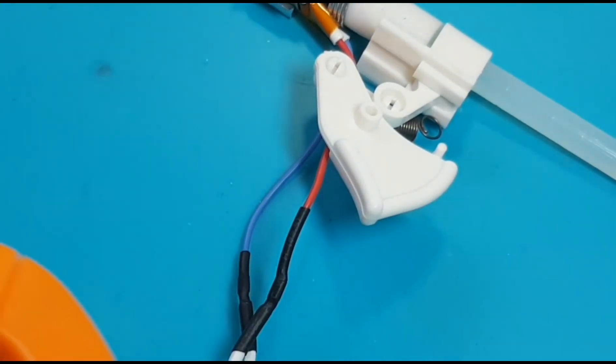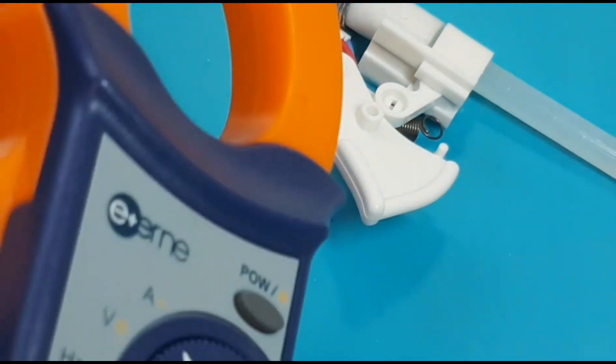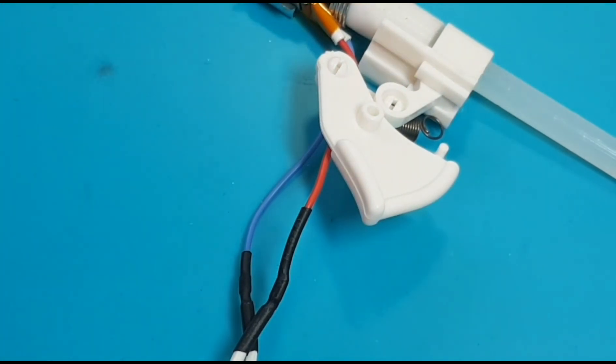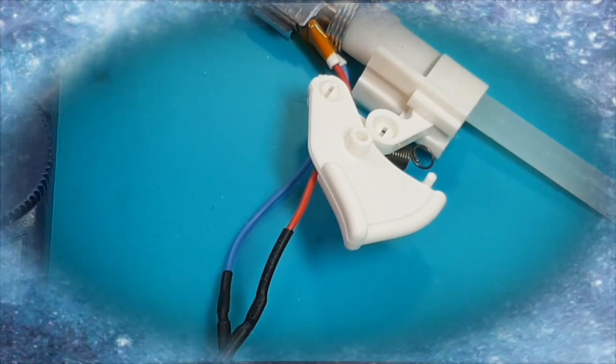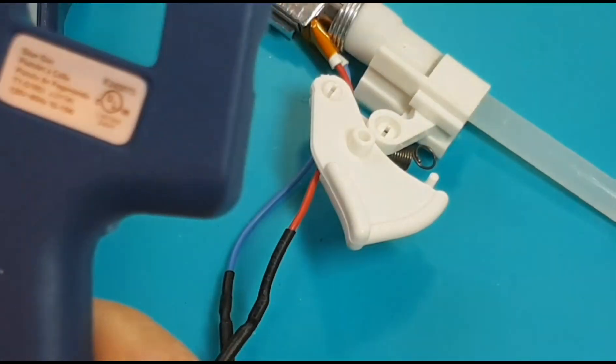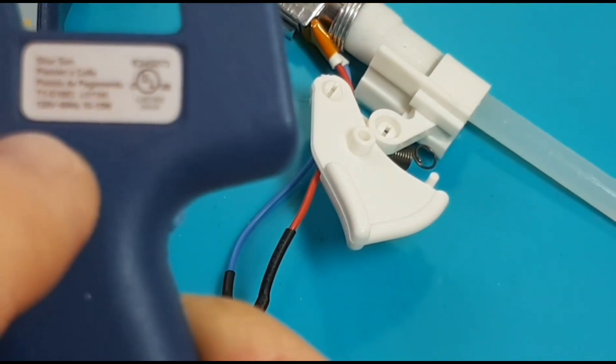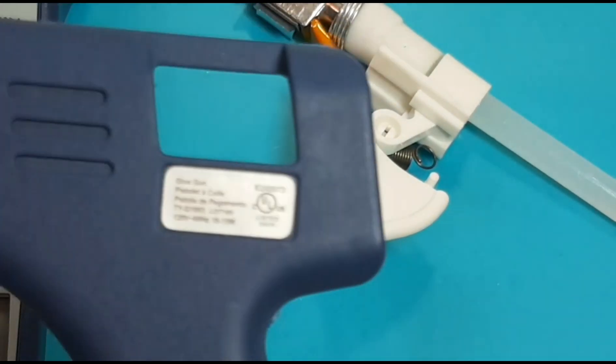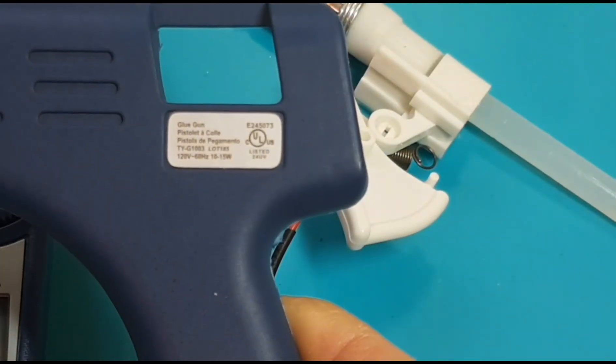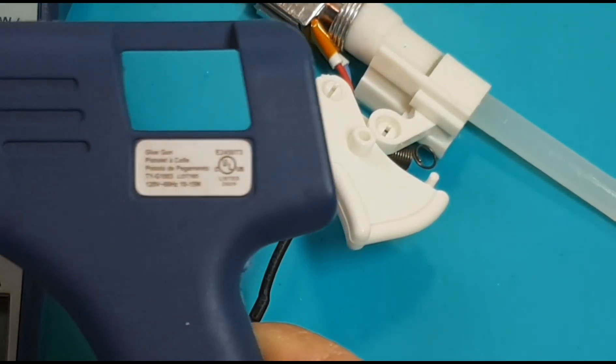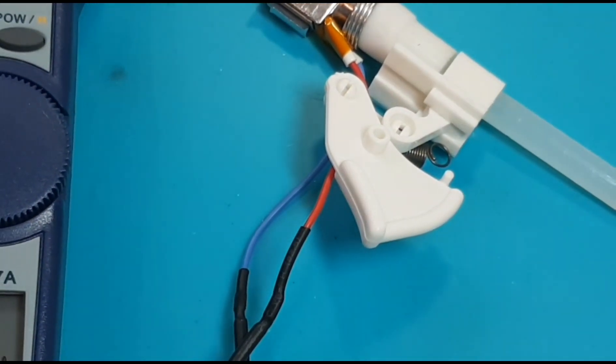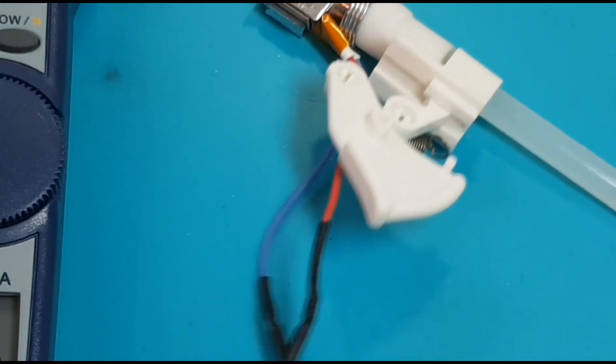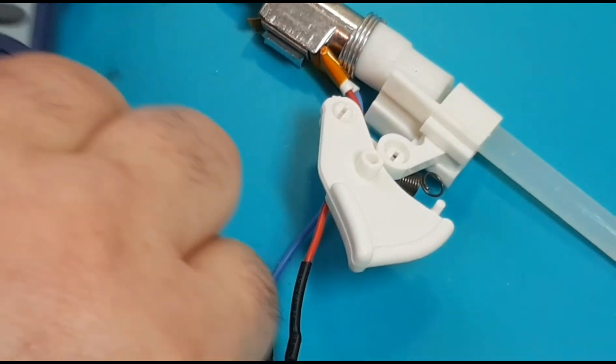So in this case, I've got a cheapo glue gun from the dollar store. That's right, the dollar store. This is like two bucks. And on the gun itself, it's saying that the gun is utilizing between 10 and 15 watts of power. So using Ohm's law, we can actually verify if this is actually true or not. So what we'll do is we've got the clamp meter here. I have it plugged into the wall right now.